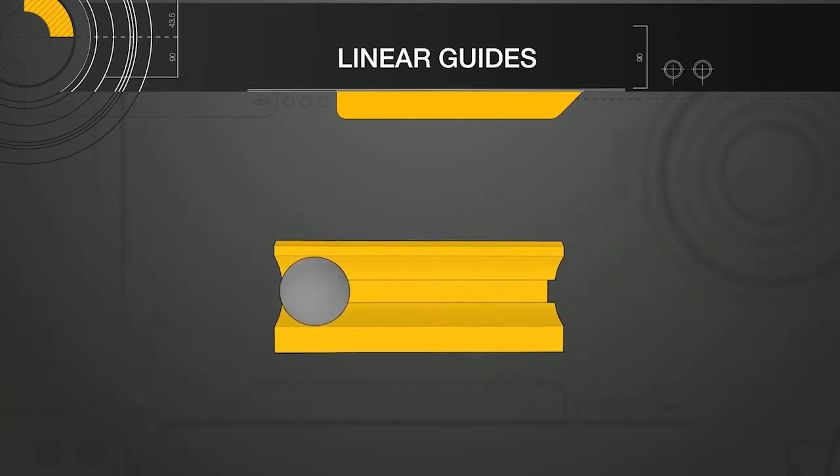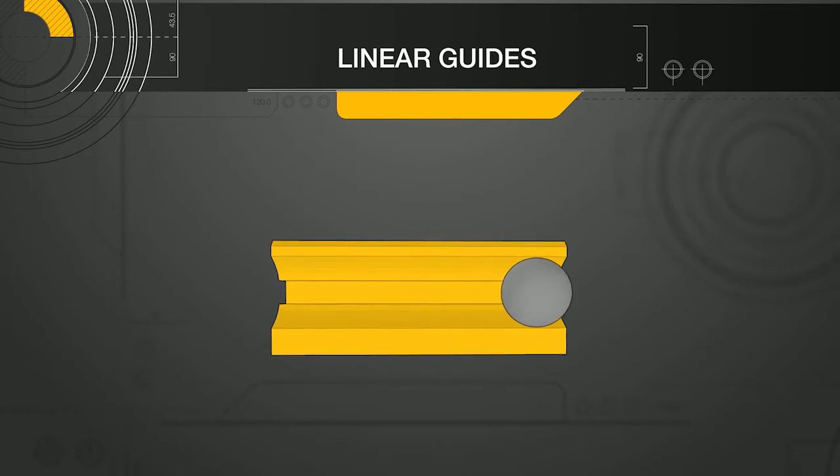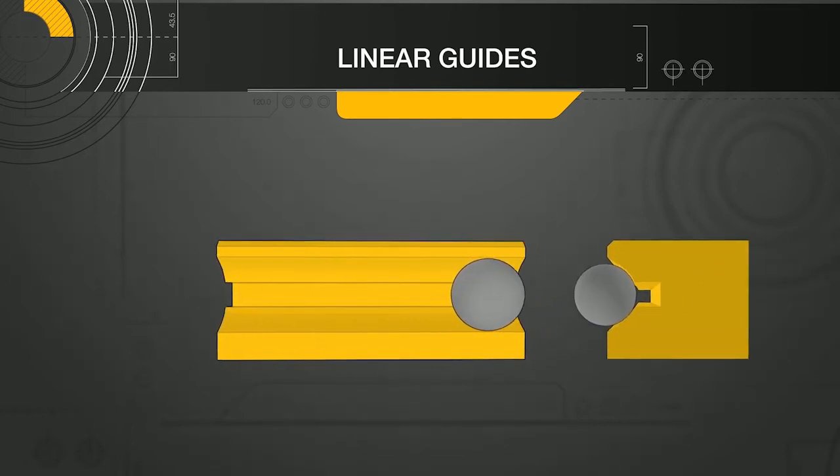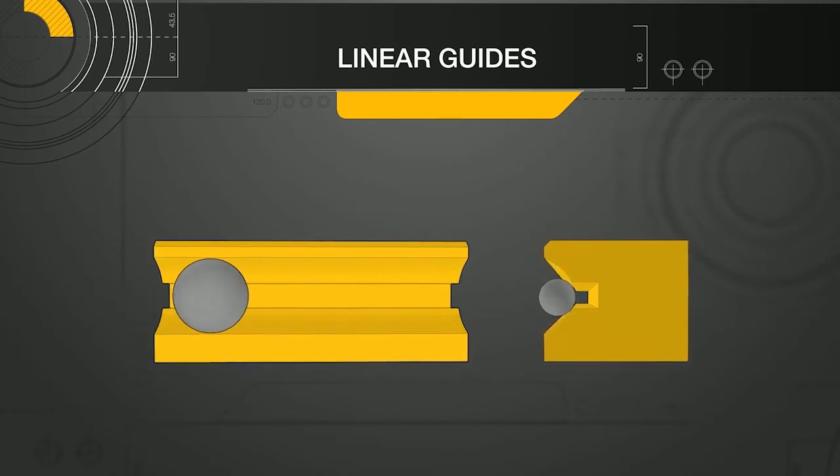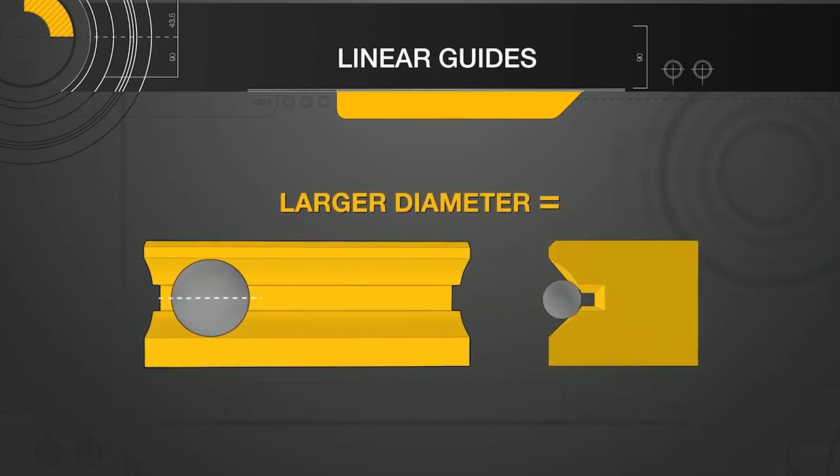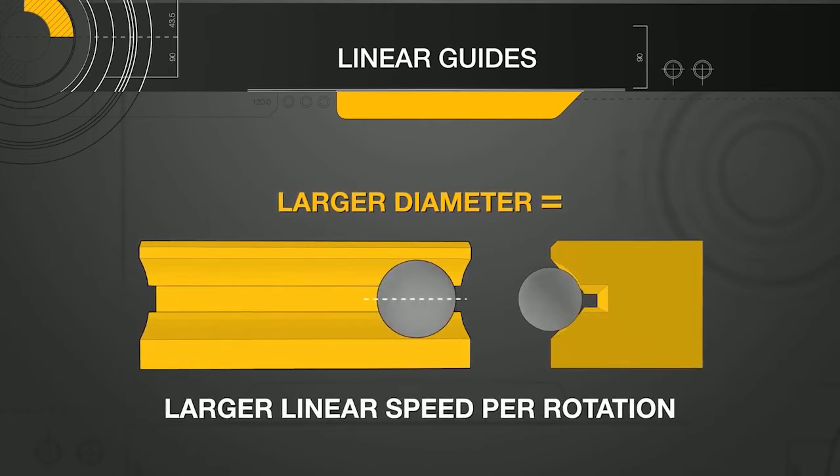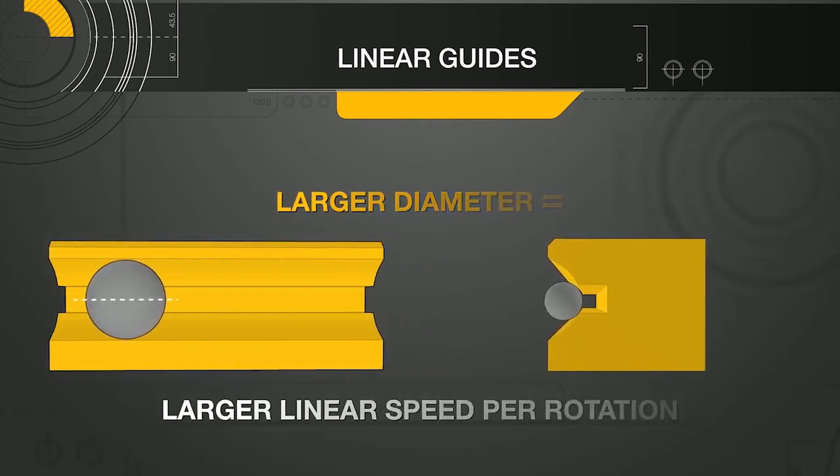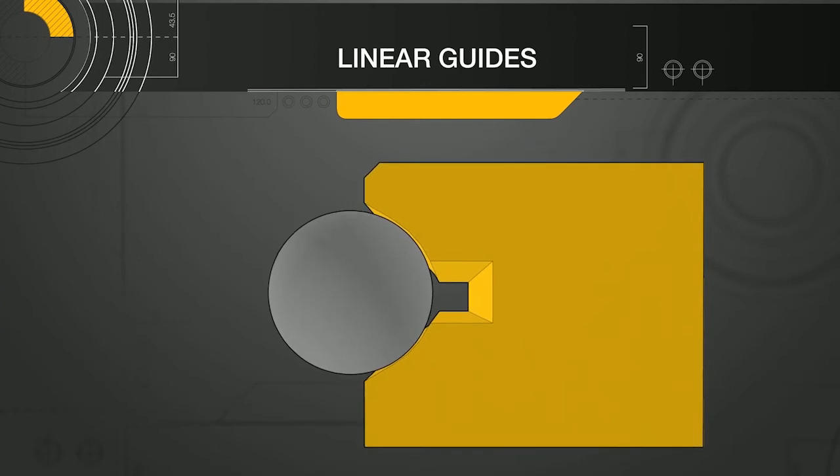To understand the downside of gothic arch, we need to look closer at how the balls actually roll in the raceway. As the ball rolls, its surface speed depends on the distance from the axis of rotation. The larger the diameter, the larger the linear speed per rotation. When looking at the contact area, the diameter near the center of the ball, D1, is much larger than the diameter further out, D2.